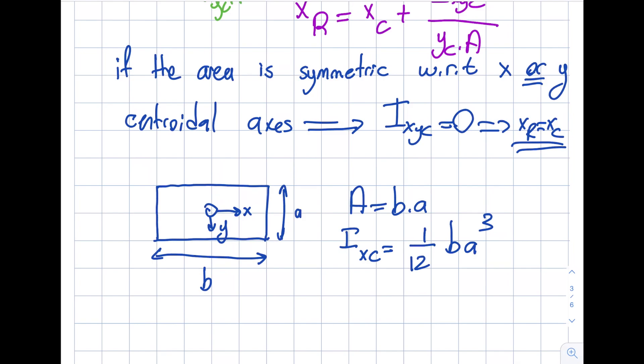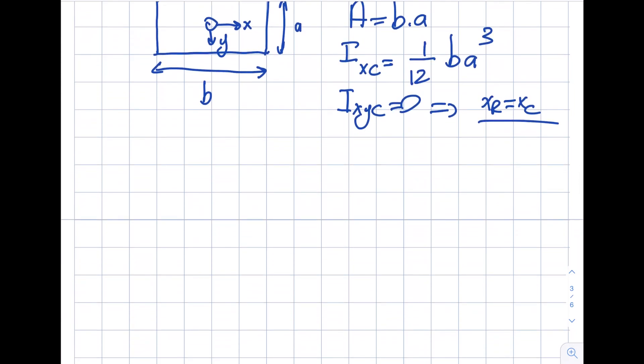One thing that we discussed is if the area is symmetric with respect to X or Y centroidal axis, then this will be zero. Let's take a look: is this symmetric with respect to this? Look at the top half and the bottom half. Is this symmetric? Yep. Then my IXYC will be zero, and therefore I will get XR equals XC, the centroid of a rectangle.